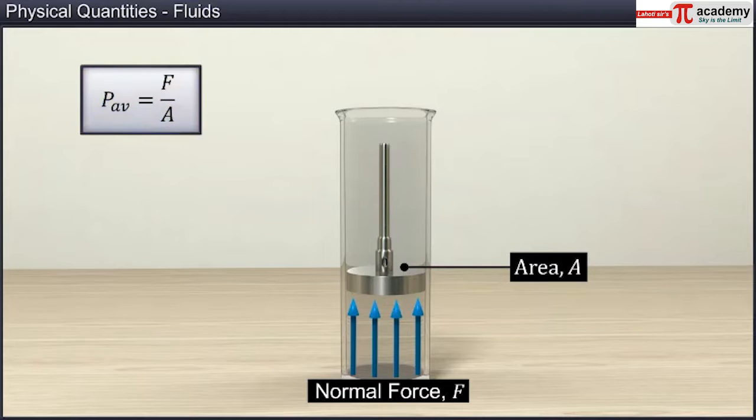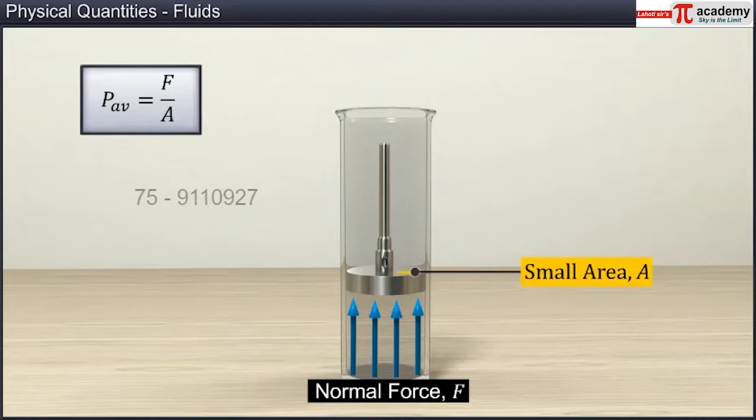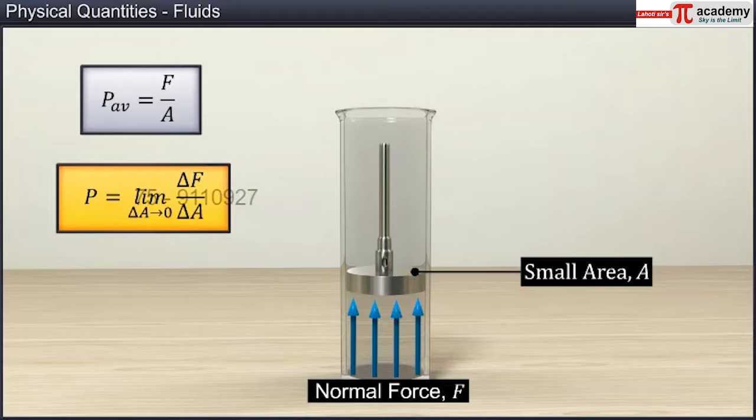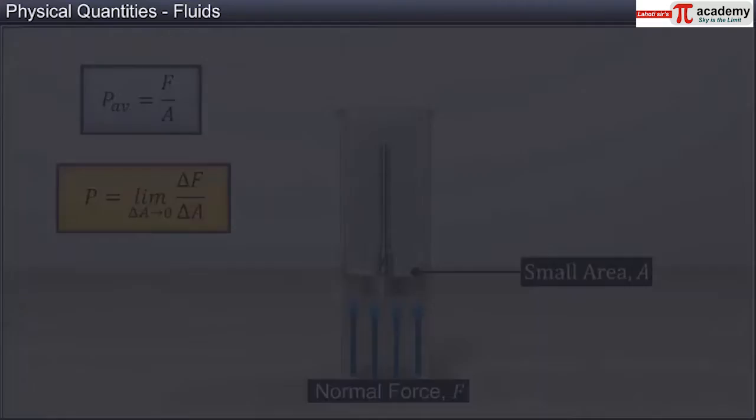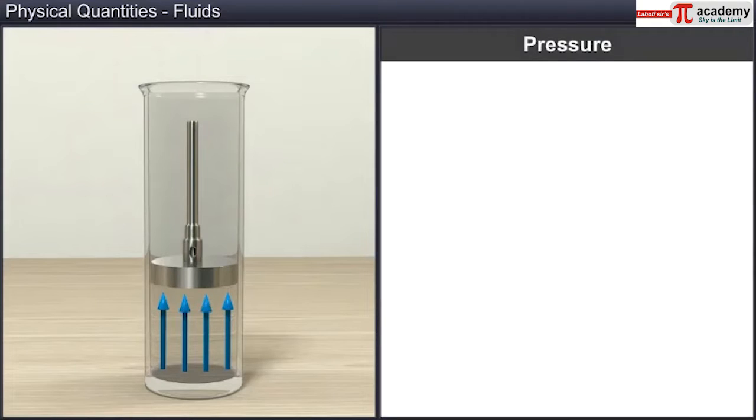In limiting case, that is, if small area of the piston is considered arbitrarily, then the pressure is represented as P equals delta F by delta A as delta A approaches to zero. The magnitude of pressure does not change with direction. Hence, pressure is a scalar quantity.